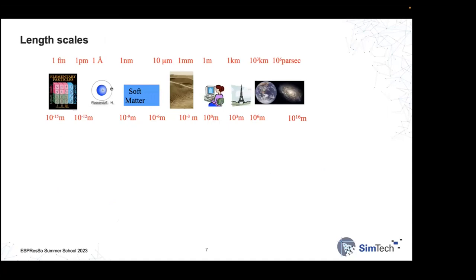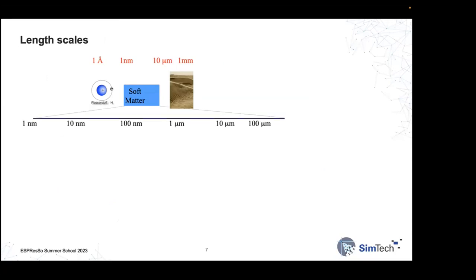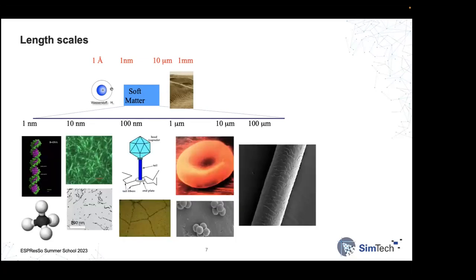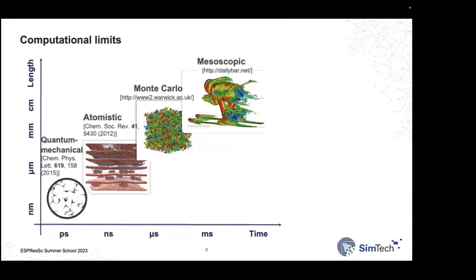In terms of length scales, soft matter sits in a range larger than typical atoms but much smaller than everyday life — roughly from the nanometer regime to several hundreds of micrometers. At the smallest scales you have molecules like methane or DNA; then actin fiber networks found in cells; bacteria and bacteriophages at hundreds of nanometers; blood cells in the micrometer range; and at the upper end, roughly the size of a human hair.